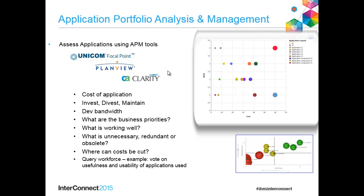You're capturing it typically in an APM tool like some of the ones mentioned here — Focal Point, Planview, Clarity. Sometimes you can capture it in the EA tool as well. In this lab we're going to bring information in from an APM tool into the architecture — certain aspects of that analysis — so we can see how it affects the architecture. Sometimes you can create OSLC links between the Enterprise Architecture tool and the APM tool if it supports Open Services for Lifecycle Collaboration, so you're keeping information in two different tools and linking across.